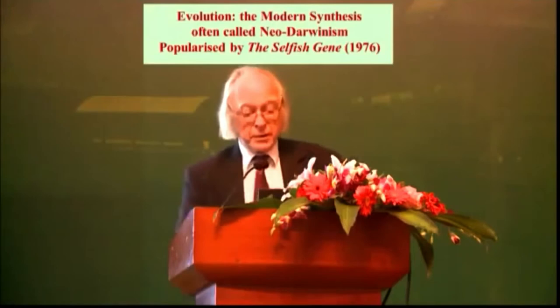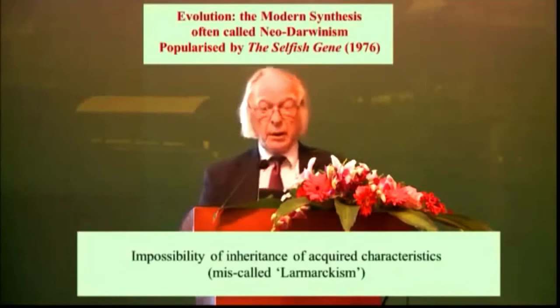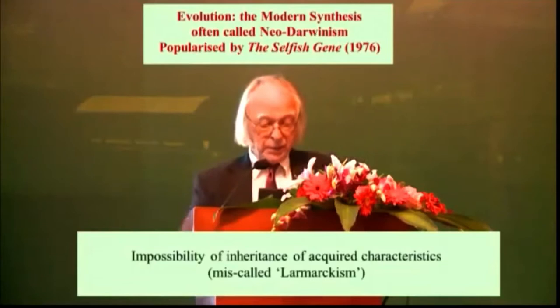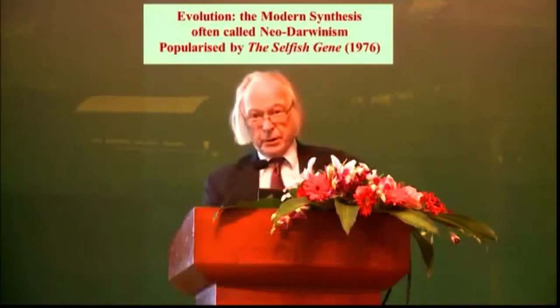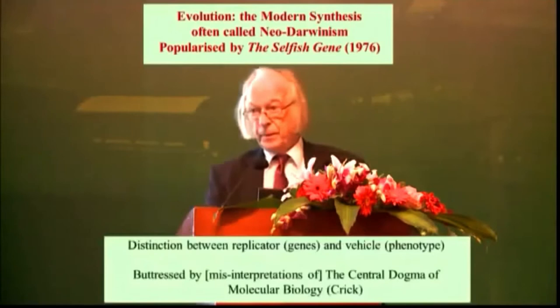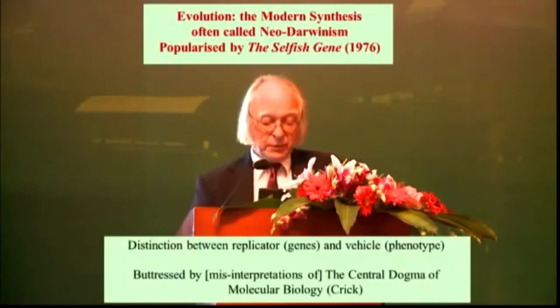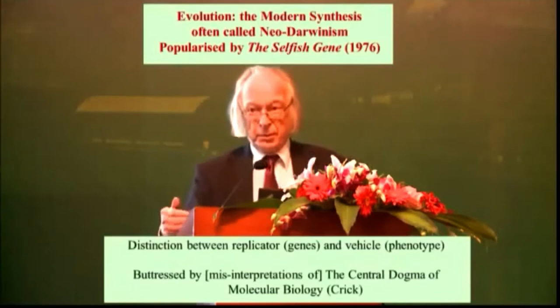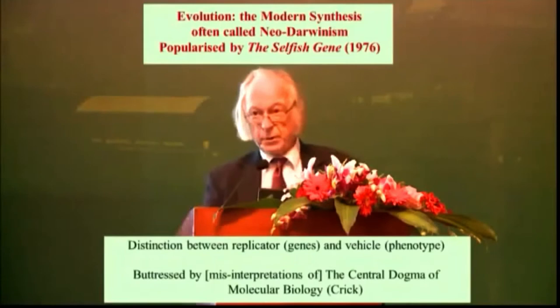The second aspect of Neo-Darwinism was the impossibility of the inheritance of acquired characteristics — it was miscalled Lamarckism. As I said earlier, Lamarck did not invent the idea; he assumed it. And there is a very important distinction, particularly in Dawkins' book The Selfish Gene, between the replicator — that is the genes — and the vehicle that carries the replicator, that is the organism or phenotype. That idea was buttressed by the Weissmann barrier idea, but also later on by the central dogma of molecular biology. All of these rules have been broken, and that is the subject of my lecture.